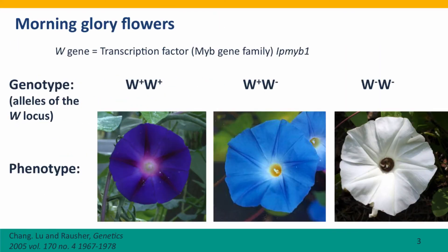Here are our morning glory flowers again. Dark blue flowers are produced by the W-plus allele when homozygous, white flowers are produced when the defective allele is present and the gene is transcribed, and light blue flowers are produced when plants have one functional copy and one defective copy of white.